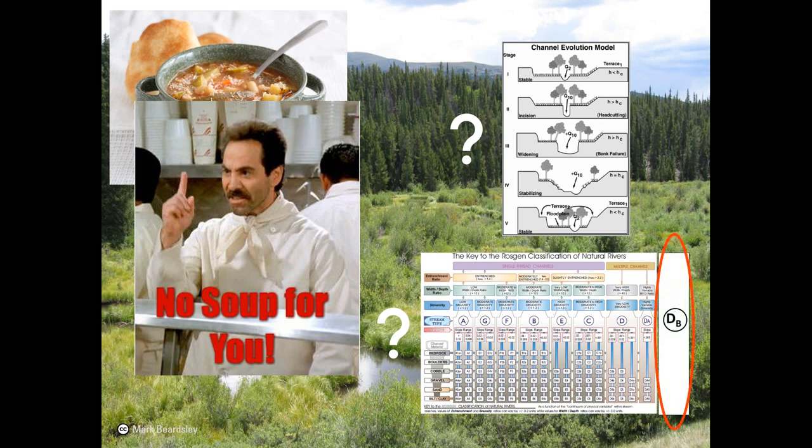We even suggested another class to add to the Rosgen system. We called it DB, for anastomosing biologically-mediated riverscapes. We naively thought that by just adding a category for these systems to the menu, maybe we could bring some harmony back to our rapidly dividing river restoration community. Well, we were wrong — it was bigger than that. Complex dynamic riverscapes just didn't fit with the theory of natural equilibrium that these physical models were based on. So the DB idea was roundly rejected. We felt defeated, but we didn't give up on complex natural riverscapes.